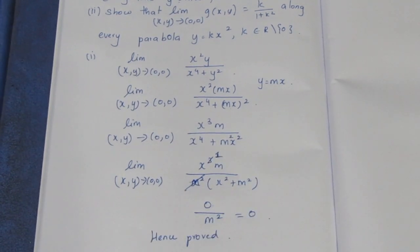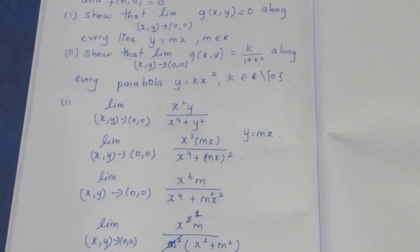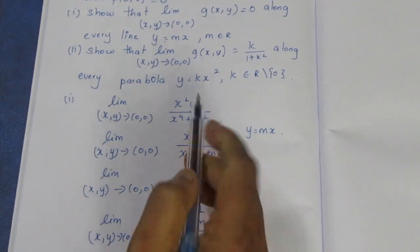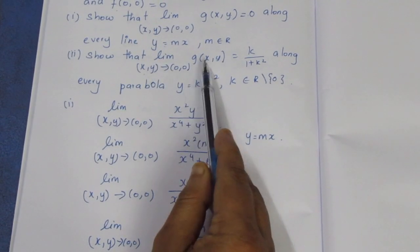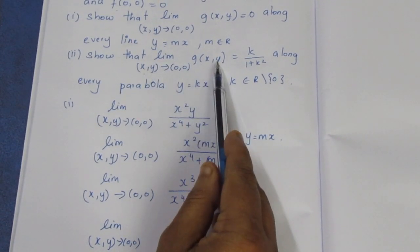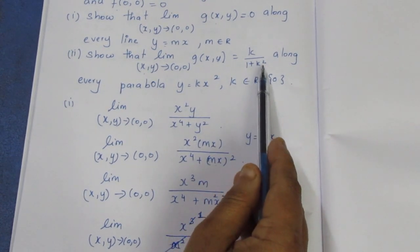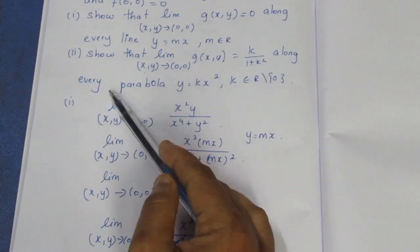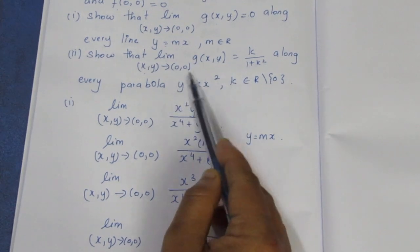The first part is proved — limit equals 0. Now for the second subdivision: show that the limit as (x,y) tends to (0,0) of g(x,y) equals k divided by 1 plus k squared, along every parabola y equal to kx squared.